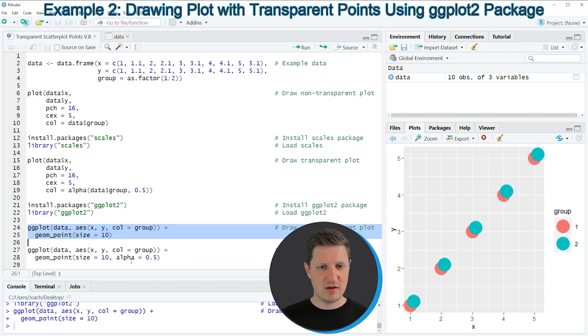Then we can apply the alpha argument within the geom_point function, as you can see in line 28 of the code. So the only difference of lines 27 and 28 compared to lines 24 and 25 is that I'm specifying the alpha to be equal to 0.5.